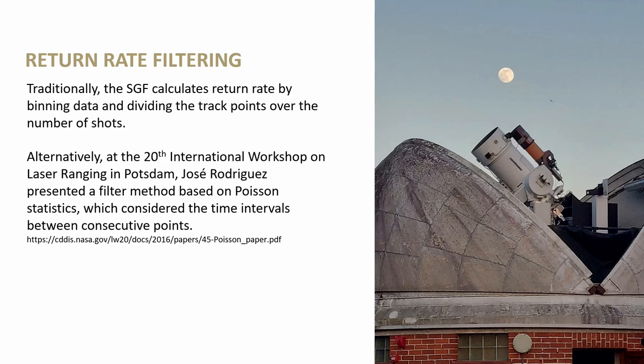Now to talk about return rate filtering. At Herstmonceux we're a single photon station. We restrict our return rate in real-time using an ND wheel, but also in the reduction process we detect high areas of return rate and remove them from the data submission. Traditionally we've done this by binning data and dividing the track points over the number of shots minus the ones beneath the track. At the 20th workshop in Potsdam, Jose presented a filter method based on Poisson statistics, which considered the time intervals between consecutive points.